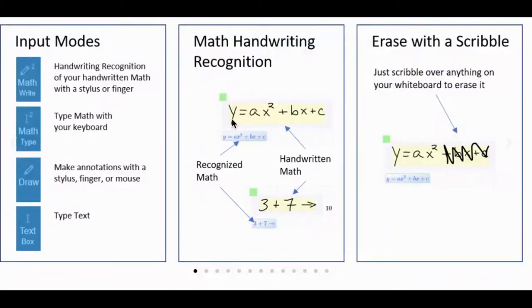The handwriting recognition looks like this. If you type an equation out, it's going to recognize your handwriting for you and type the equation in math font for you. Then if you want to erase, you just scribble over what you want to erase and it'll take it off.